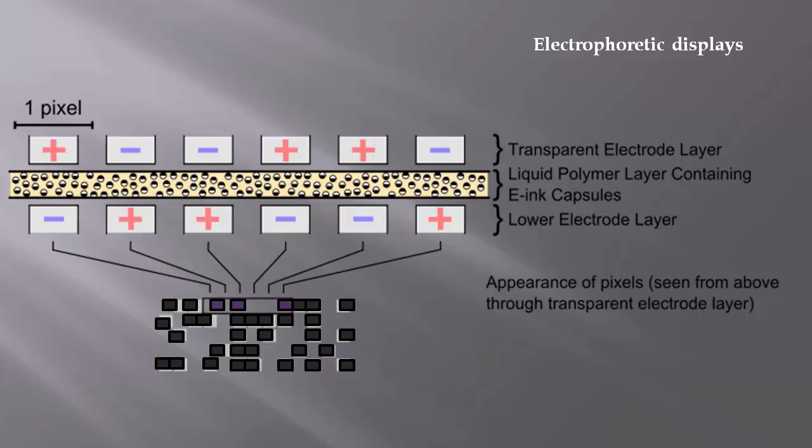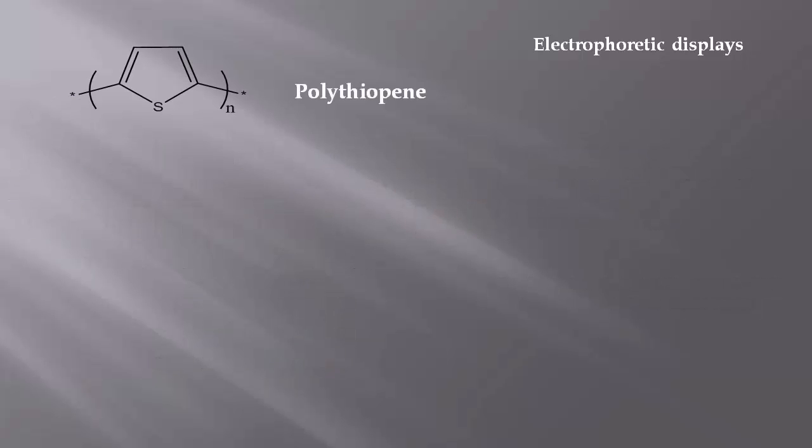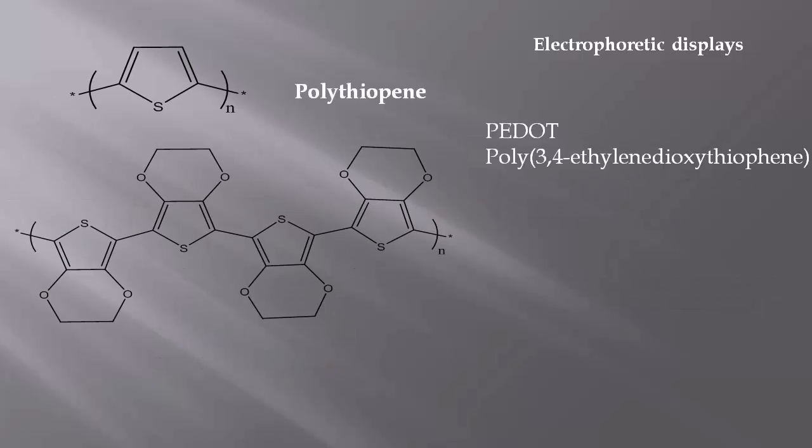Most of the electrochromic polymers used are derived from polythiophene, by adding substituents to the heterocyclic ring. One of these derivatives is PEDOT, one of the most studied color-changing polymers.